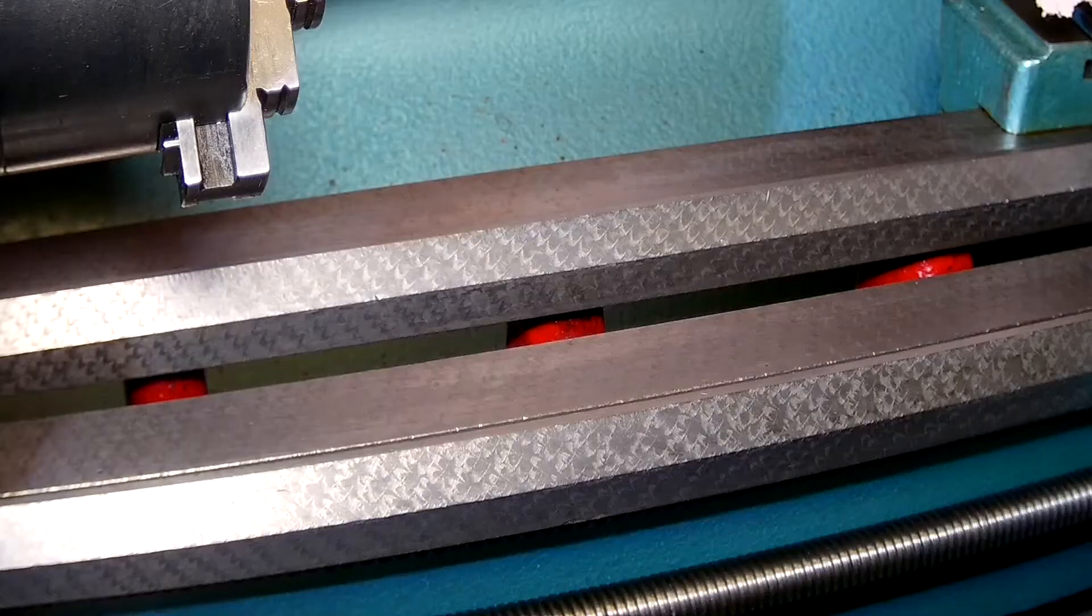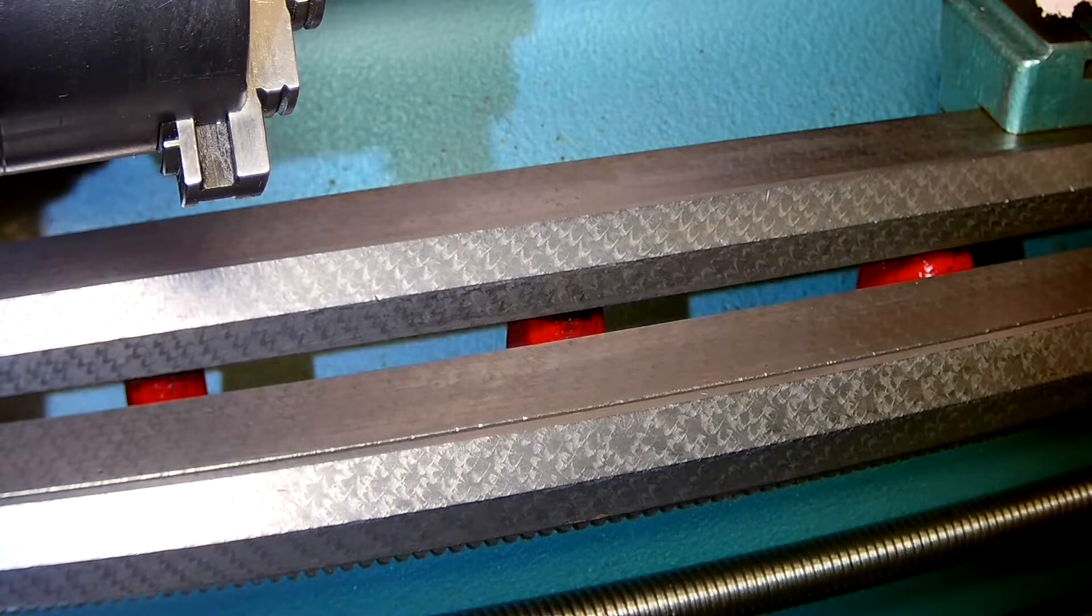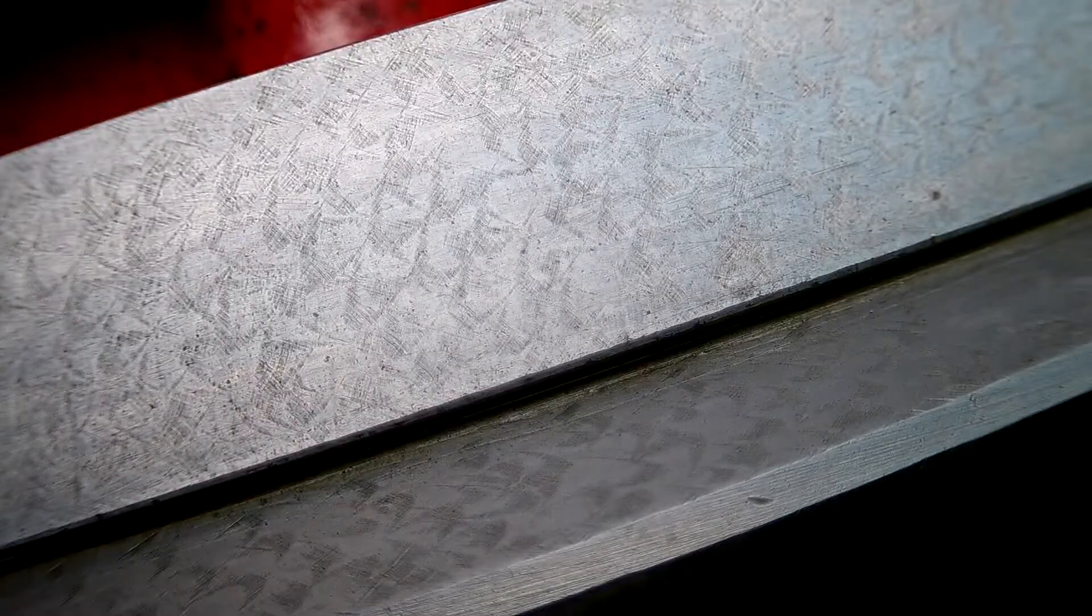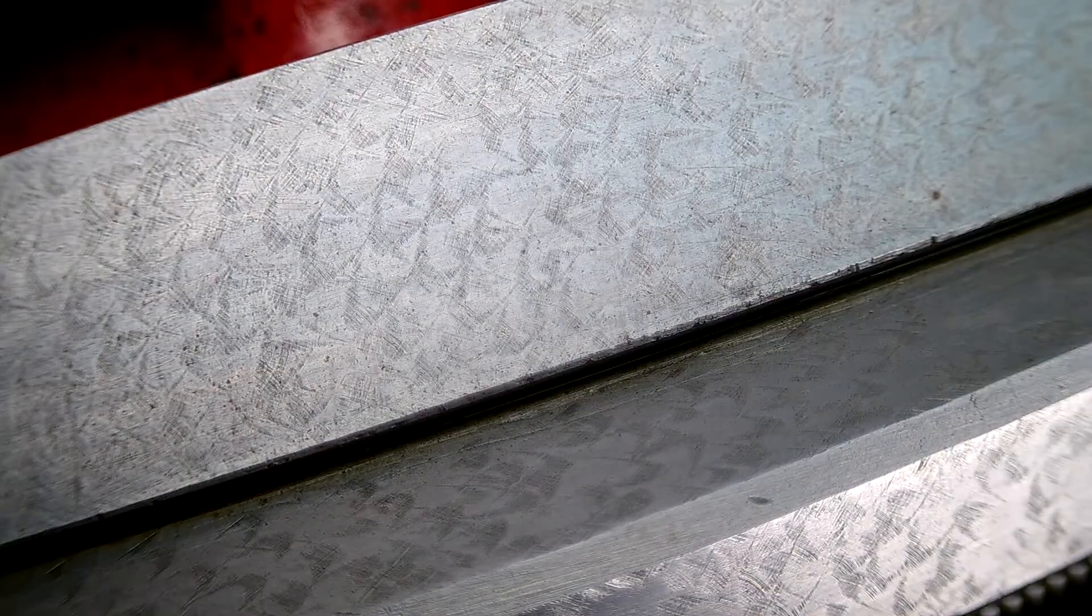But I've always been interested in how the ornamental scraping like you find on old machines, like this Viceroy lathe, is done. It consists of a pattern of crescents or half moon shapes scraped into the surface. It helps with oil retention and is decorative.